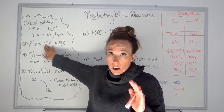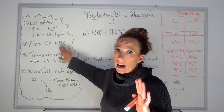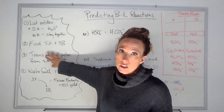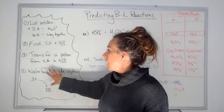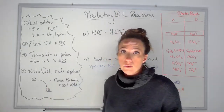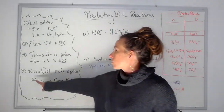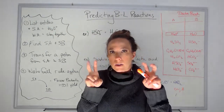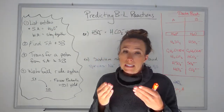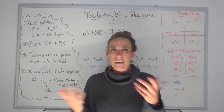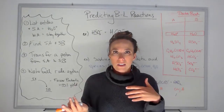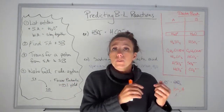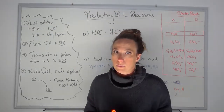Then we're going to put our finger on our data booklet, find our strongest acid, find our strongest base, and write those reactions by transferring a proton. The waterfall rule applies here too. If our strongest acid is above our strongest base, we think it's spontaneous — but we can't say that because both reactions are happening. It means that direction is more spontaneous than the other direction.